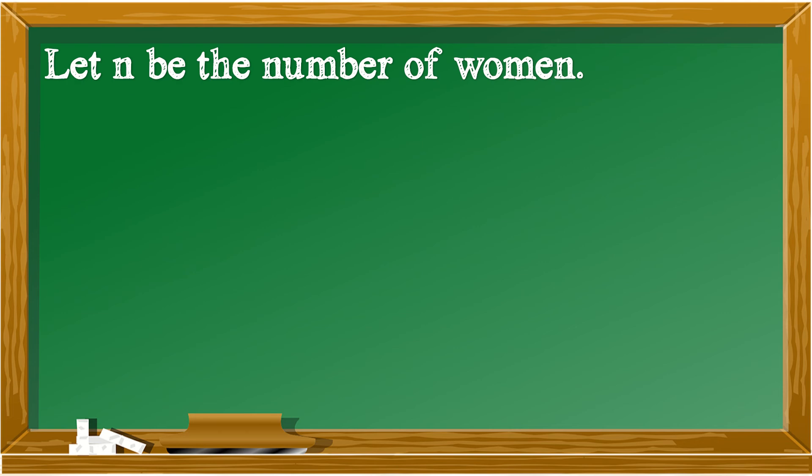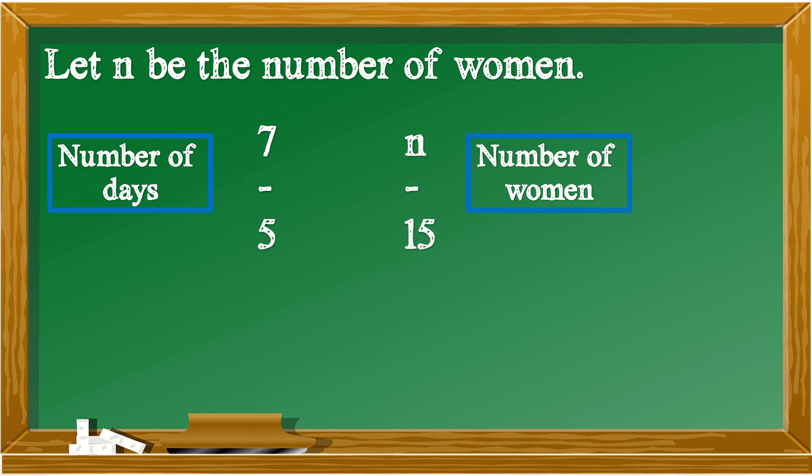Let N be the number of women. So on the other side, number of days. Number of days mentioned are 7 and 5. And on the other side, the number of women mentioned is only 15. The other number of women is still missing. We assume that that number of women will increase, so we put N at the top, because N will be the higher value than 15.